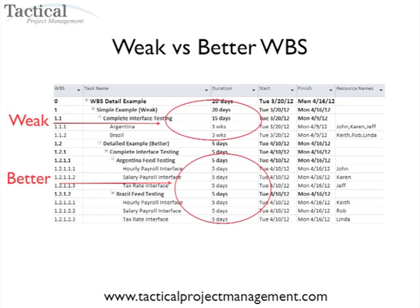Let's look at an example. In this slide, I have some work being done over three weeks where we're doing interface testing with Argentina and interface testing with our Brazil system. I've assigned a duration of three weeks and assigned John, Karen, and Jeff to do the Argentina interface testing, and Keith, Rob, and Linda to work on the Brazil interface testing. The reason this is weak is that within a span of three weeks I don't have much visibility into what these resources are working on or their capacity to take on additional work.